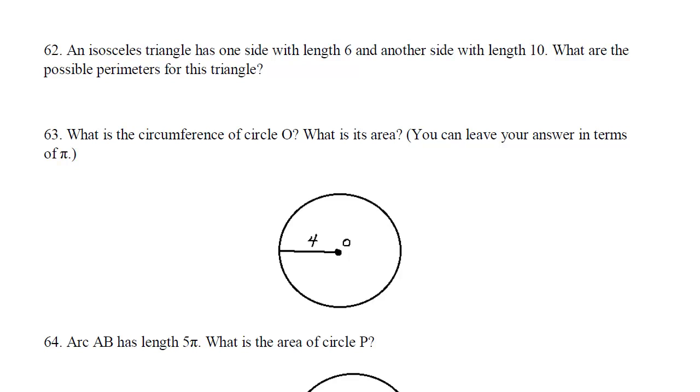Let's finish up the diagnostic test with some geometry and a little probability and statistics. An isosceles triangle has one side with length 6 and the other side with length 10. What are the possible perimeters for this triangle?